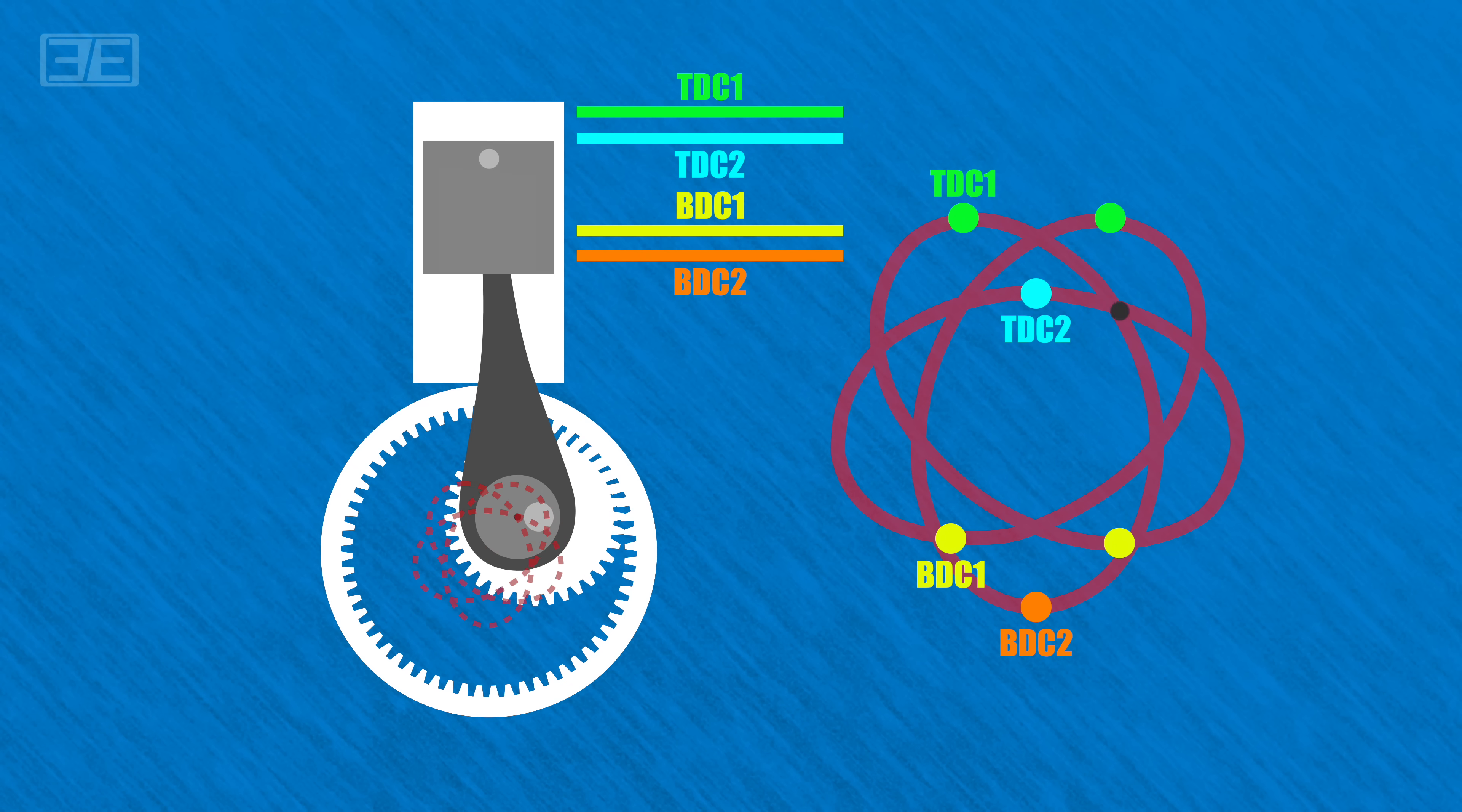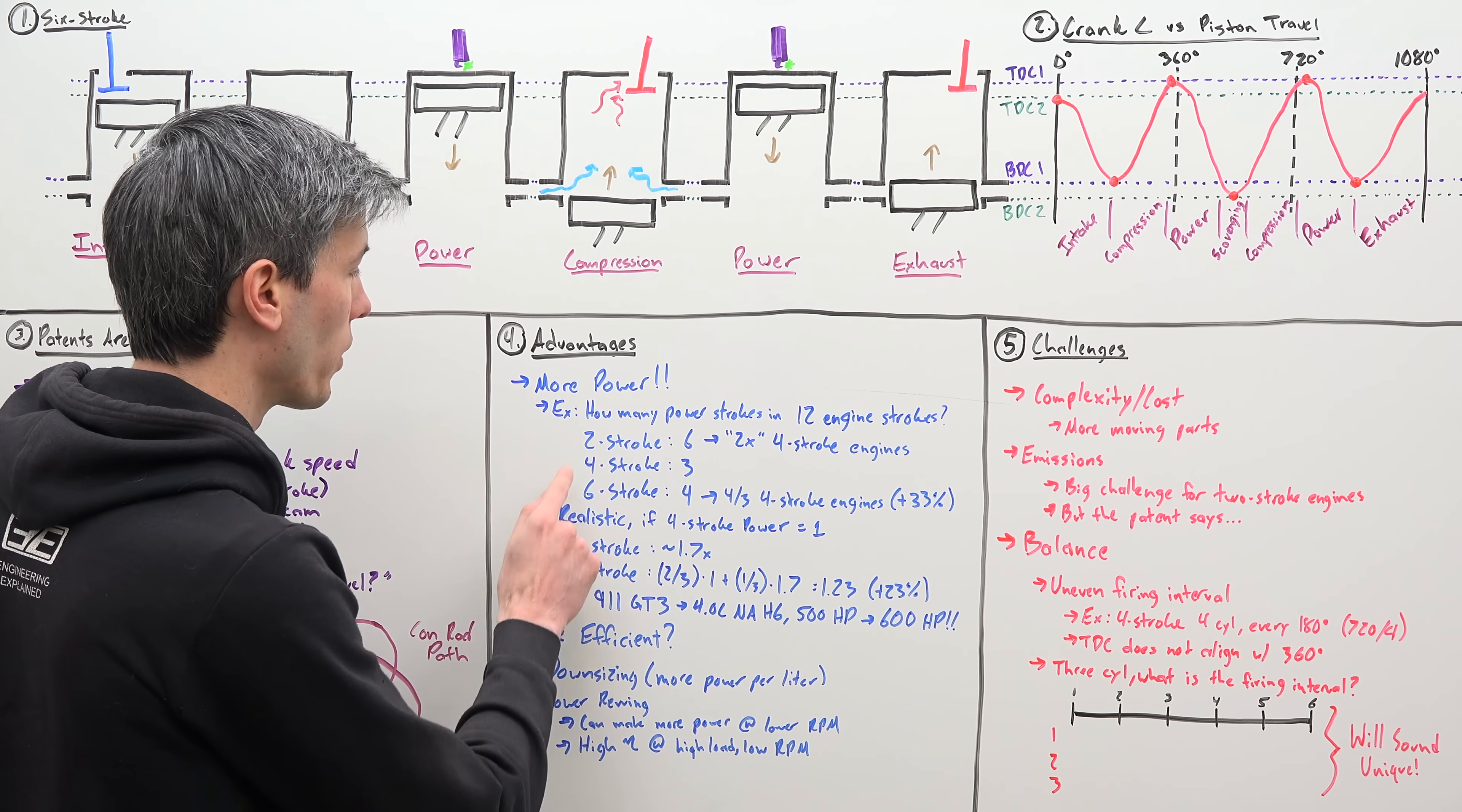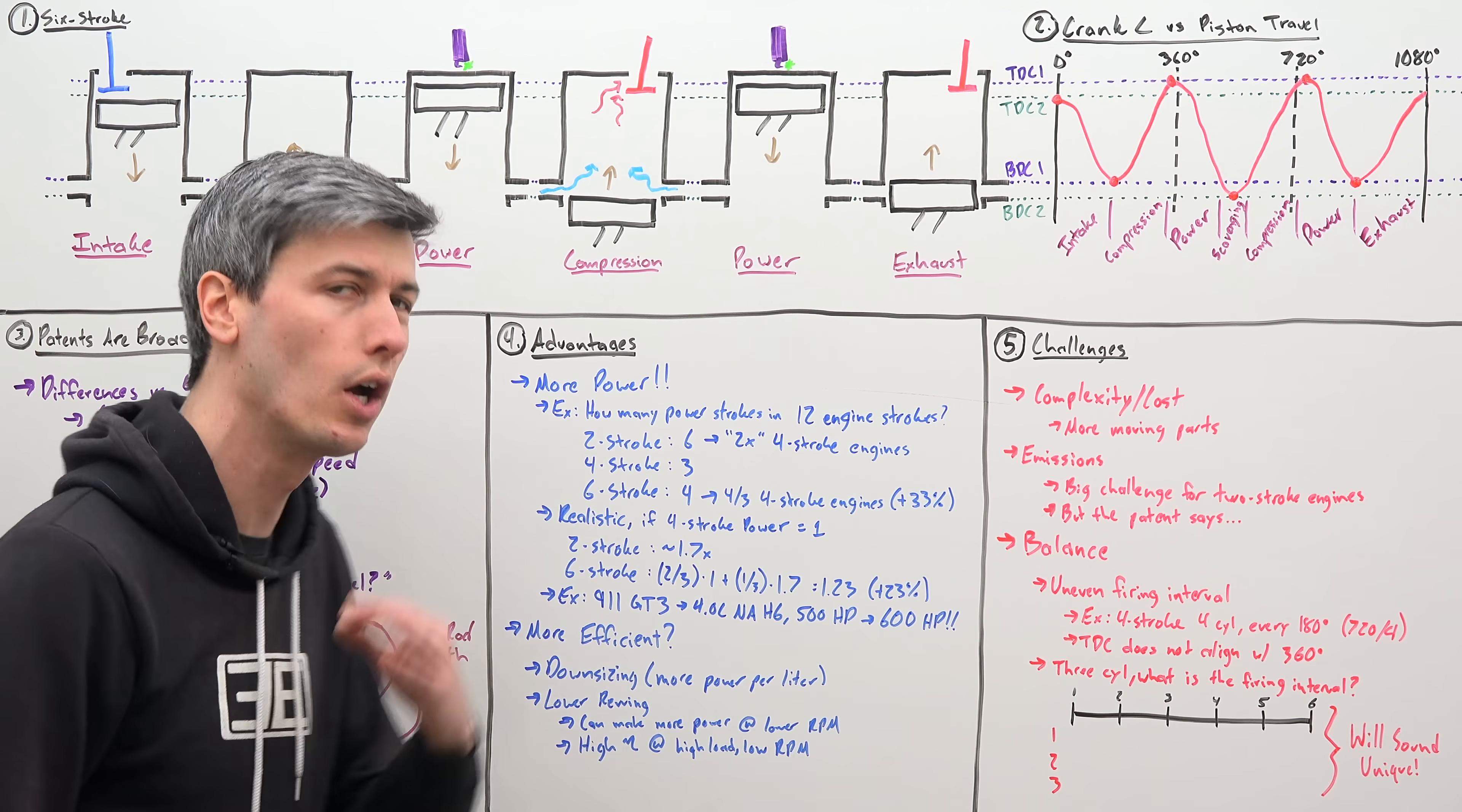So why go to all this trouble? What's the point? Well, let's talk about advantages. The most obvious advantage versus a four-stroke engine is that we have more power. We have more power strokes. Let's look at 12 engine strokes for different styles of an engine. 12 engine strokes with a two-stroke, that's six power strokes. 12 engine strokes with a four-stroke engine, that gives us three power strokes. Or 12 engine strokes with a six-stroke engine, 12 divided by six is two, but we have two power strokes per cycle, two times two is four. So four versus three power strokes in 12 total strokes. In other words, about four thirds or a 33% power advantage over a four-stroke engine.